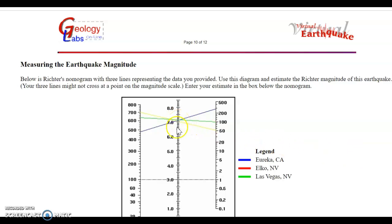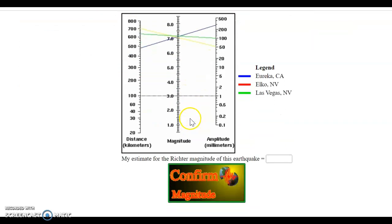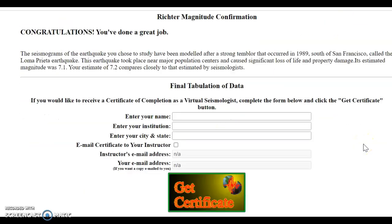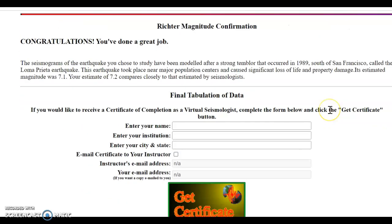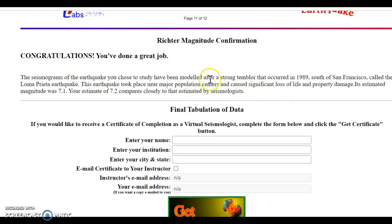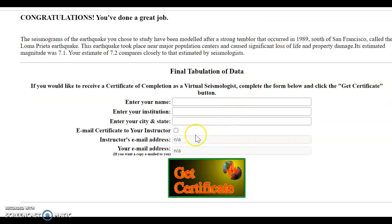It comes up to be about 7.2. Remember, they didn't meet in an exact circle, so they're probably not going to cross all in one exact point here either. So 7.2, 7.3. Let's see, if we put in 7.2, it's going to like that. It says you've done a great job. It gives you a little information about the actual earthquake that has happened there. And you can get your certificate, fill in your information, and click.